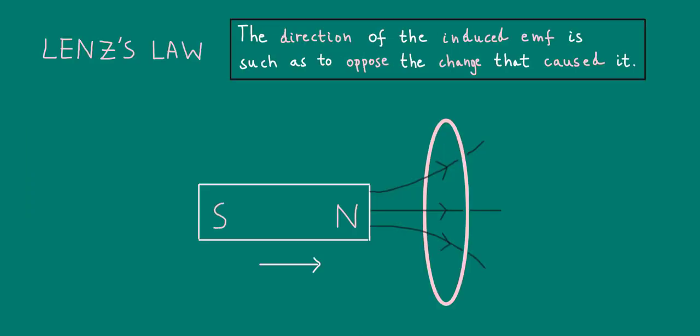So, when a bar magnet is pushed into a coil of wire, this results in a change of magnetic flux linkage in the coil. This change causes, via Faraday's Law, an induced EMF and current to develop in the coil.